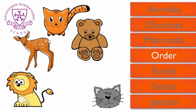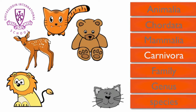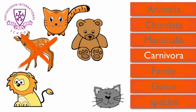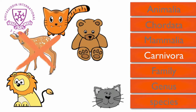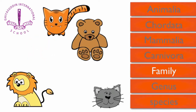Order is the name of the next level. The order the lion belongs to is called Carnivora, which means meat eating. The deer is not a meat eater, so we can eliminate it.